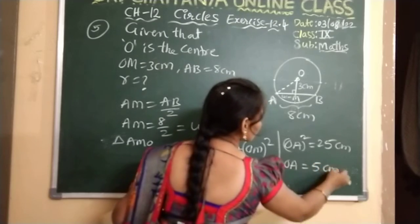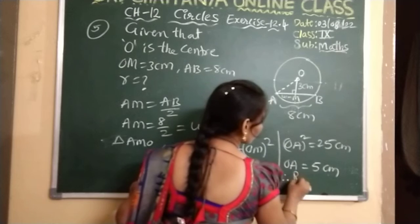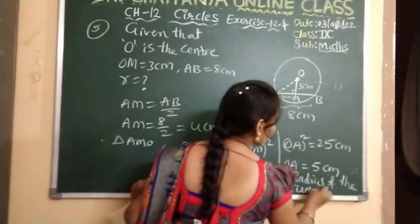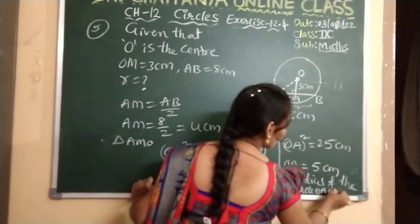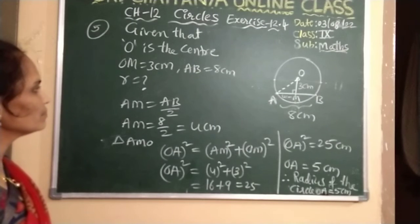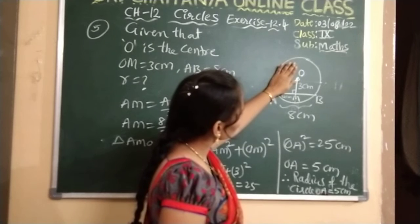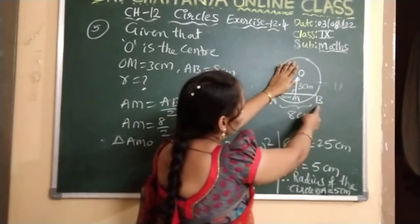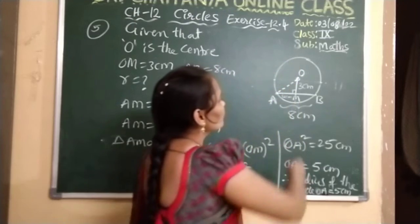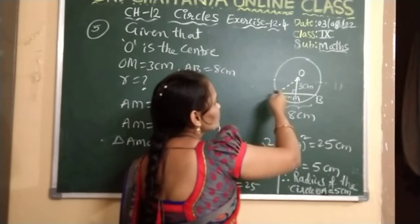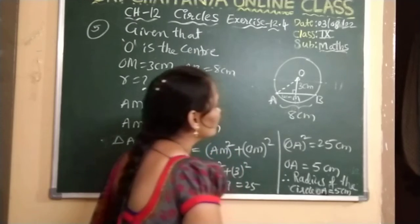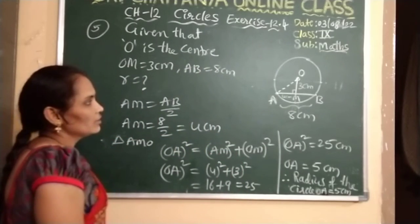Taking square root on both sides, OA equals 5 cm. Therefore, the radius of the circle OA equals 5 cm. Very simple — they gave AB as 8 cm and OM as 3 cm. Using AB you find AM, then draw a construction from the centre to point A, forming right-angle triangle AMO, and apply Pythagoras theorem to get the radius.